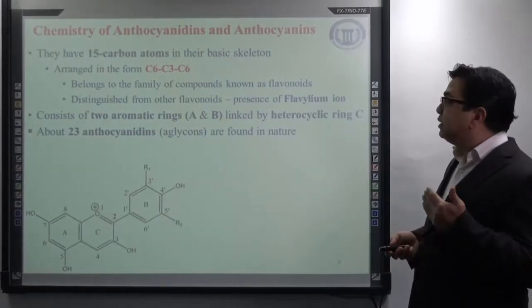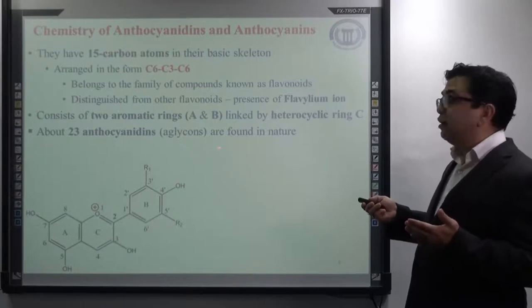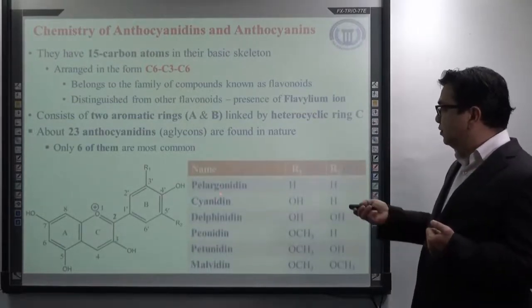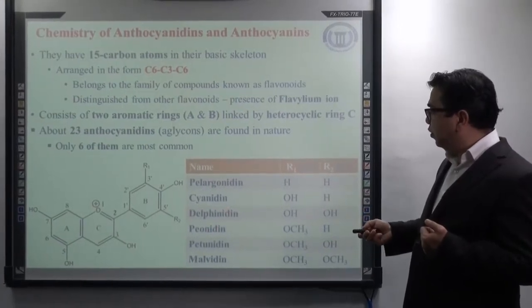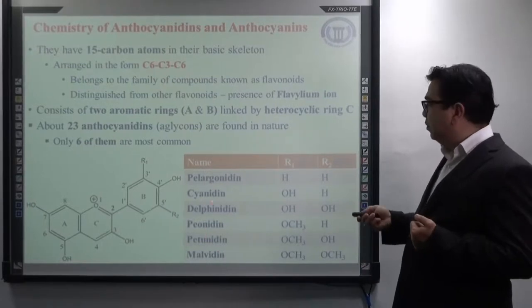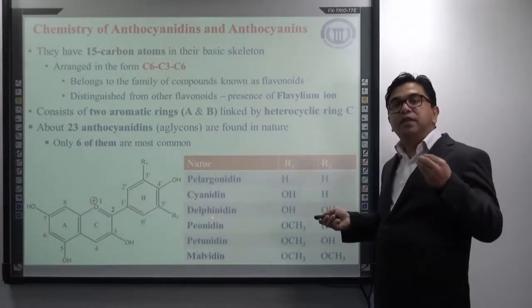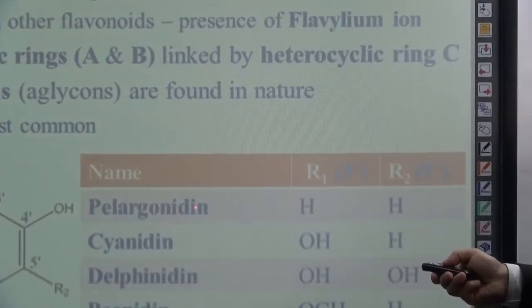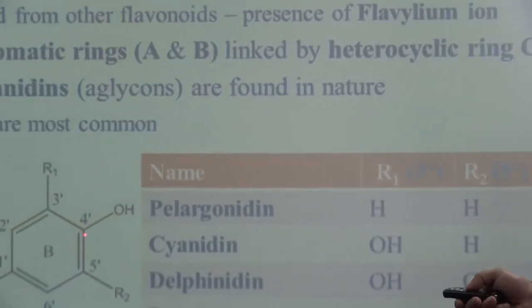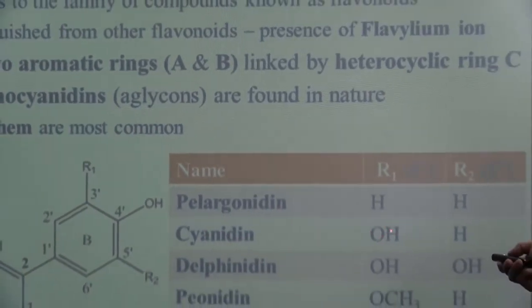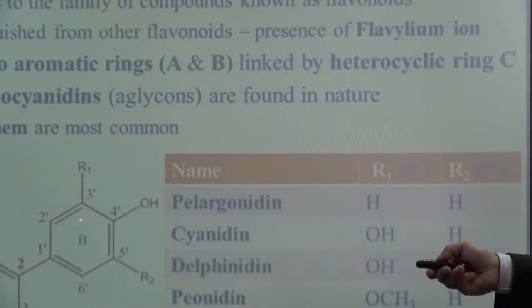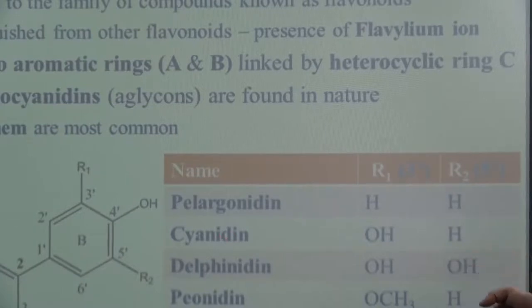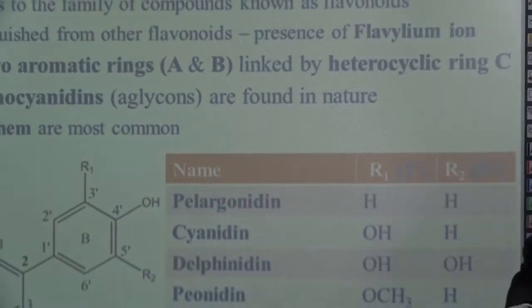About 23 anthocyanidines — the aglycones without sugars — are found in nature, among which six are most common: pelargonidine, cyanidine, delfinidine, peonidine, petunidine, and malvidine. If you look at the difference between them, all of them differ from each other only based on their substitution pattern at ring B. For example, pelargonidine has only one hydroxyl (OH) group attached at the fourth position of ring B. Whereas in cyanidine, it has one OH group at the third position and another OH group at the fourth position of ring B.